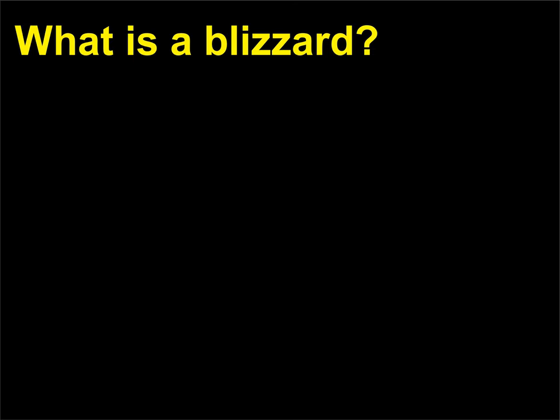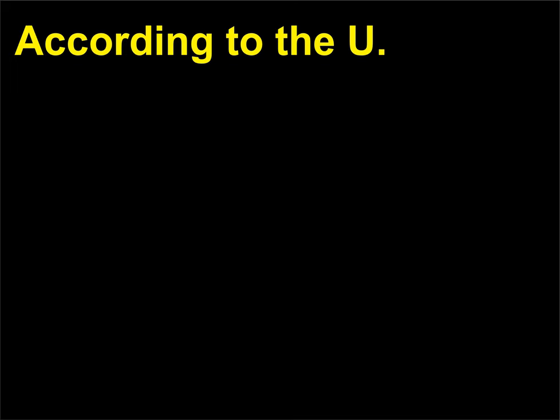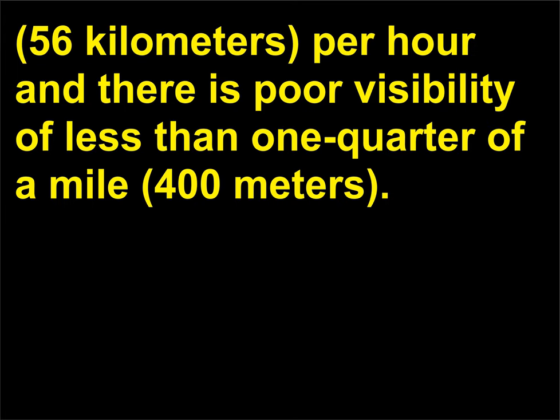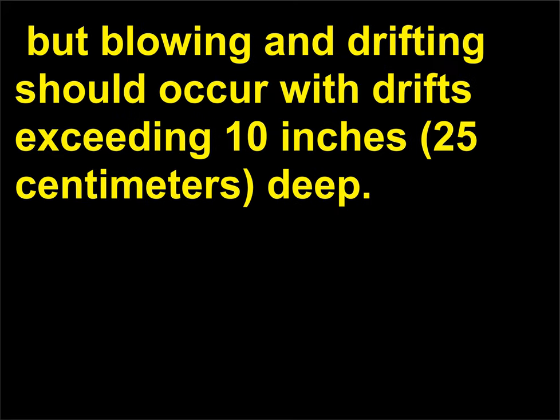What is a blizzard? According to the U.S. National Weather Service, a winter storm is considered a blizzard when wind speeds reach 35 miles (56 kilometers) per hour and there is poor visibility of less than one quarter of a mile (400 meters). Snow does not need to be falling at the time, but blowing and drifting should occur with drifts exceeding 10 inches (25 centimeters) deep.